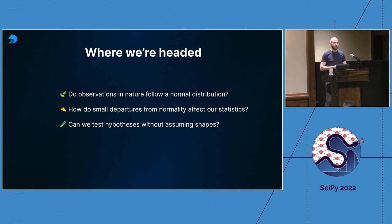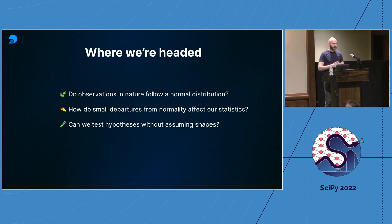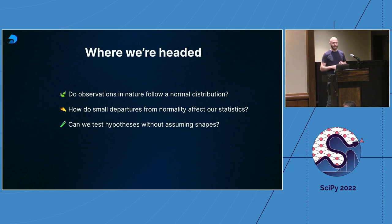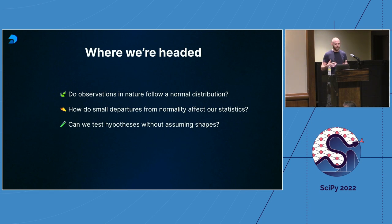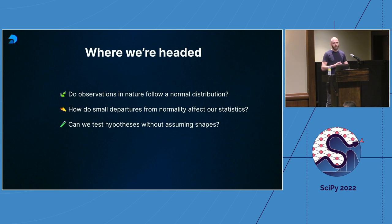We're going to learn a lot about the normal curve and various other normal-ish curves and how they affect our statistics. I'll use that as a jumping-off point to introduce you to some modern methods. We're going to answer three questions: Do observations in nature actually follow a normal distribution? Do small departures from normality have any practical impact on our statistics? And can we test hypotheses without assuming a theoretical shape like a normal distribution or t-distribution?